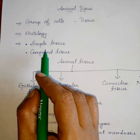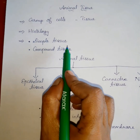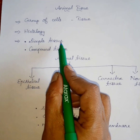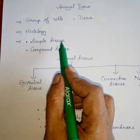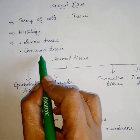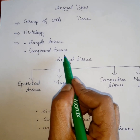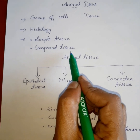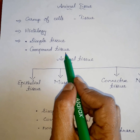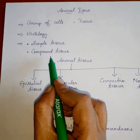A simple tissue is a group of cells having the same origin, same form, same structure, and they work together to perform the same function. A compound tissue is a group of cells having different structure and different function, but they coordinate to perform a specific function.